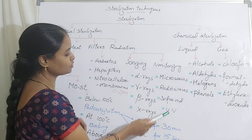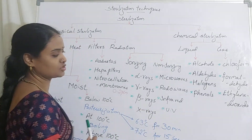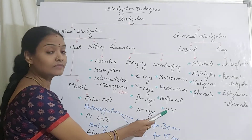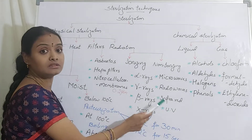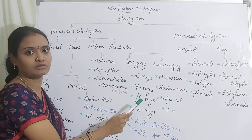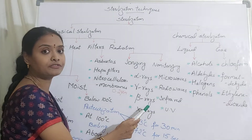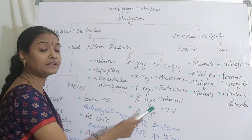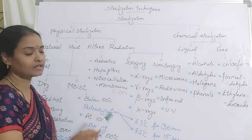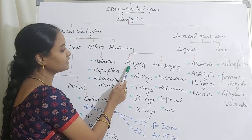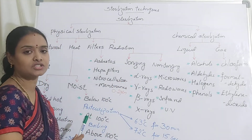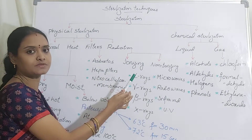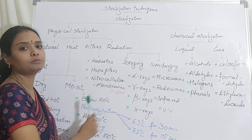UV radiation is another non-ionizing form. UV rays cause thymine dimer formation in the DNA of bacteria, which blocks replication. In this way, both ionizing and non-ionizing radiations can sterilize microorganisms or any substance.